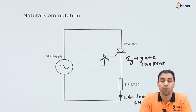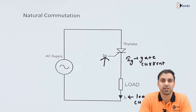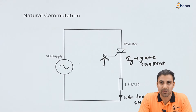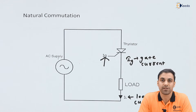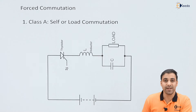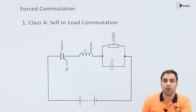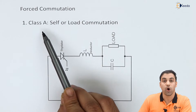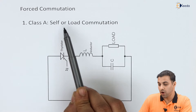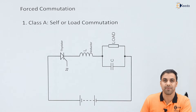Now let's talk about what is forced commutation. Remember one thing: natural commutation occurs naturally — you do not need an external circuit for natural commutation. But for forced commutation, we need an external circuit. Let's talk about Class A, or self or load commutation circuit.